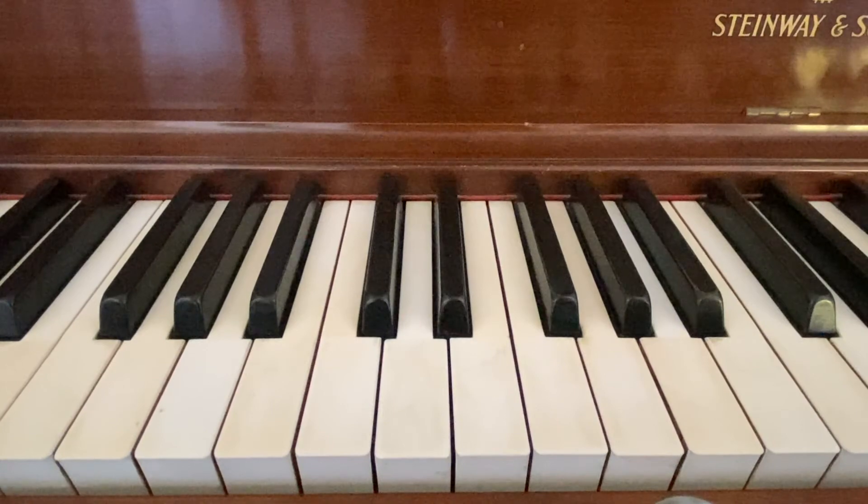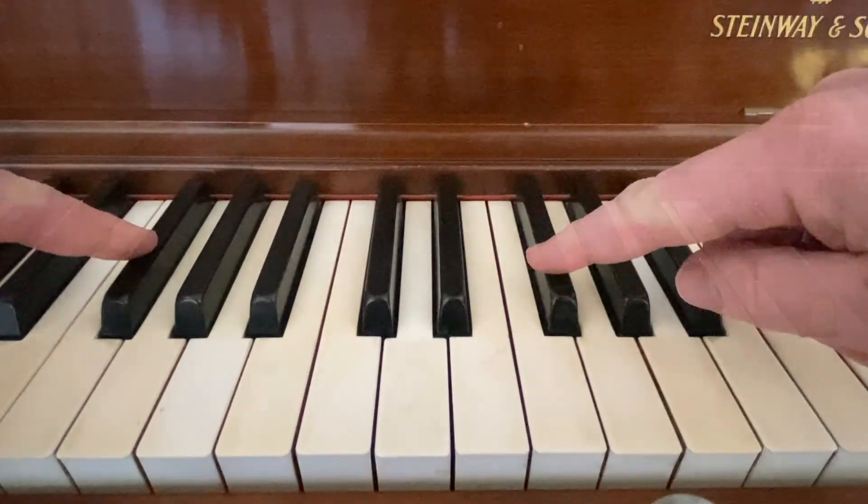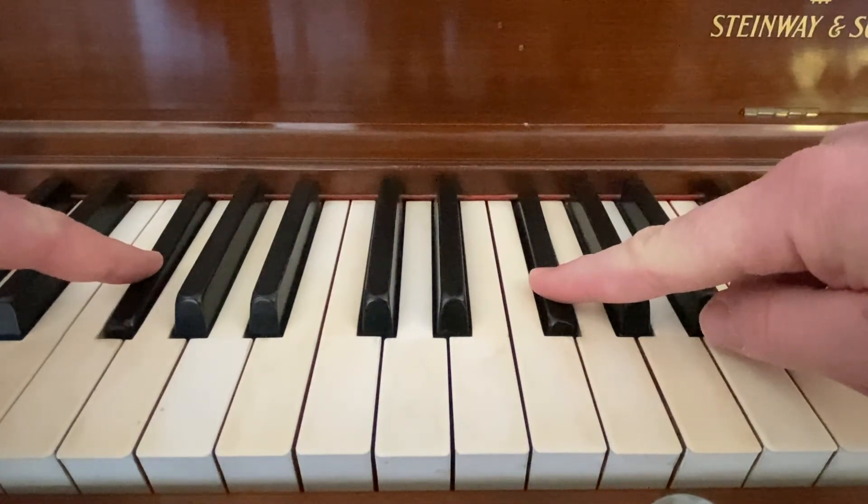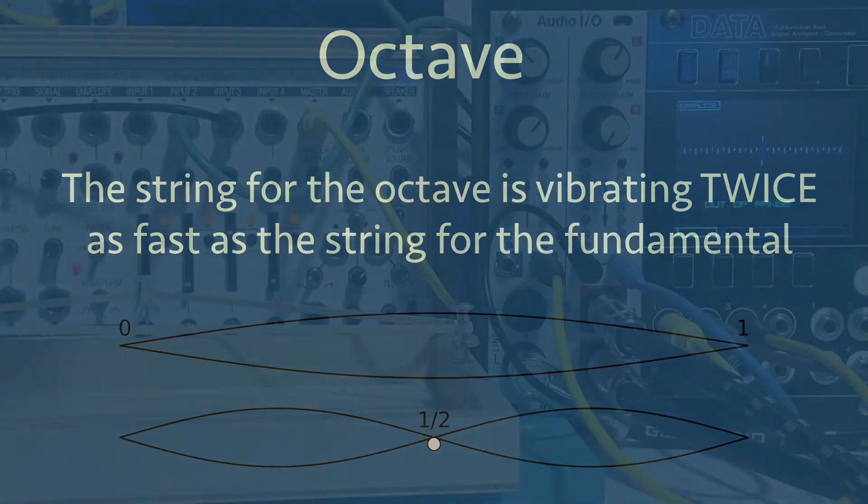If we play this interval of an octave on a piano, both notes sounding at the same time, it sounds like this. On the piano, the string for the higher note is vibrating twice as fast as the string for the lower note. On my crude guitar, when I cut the string in half, the side that I strummed was vibrating twice as fast as the uncut string.